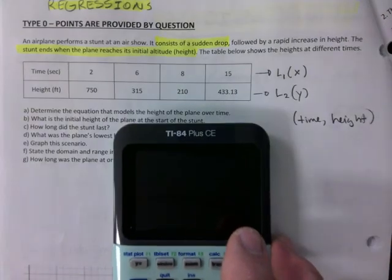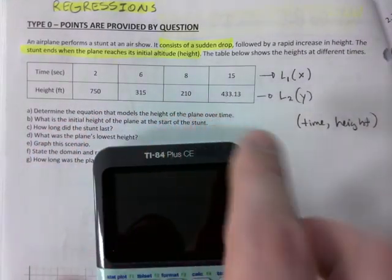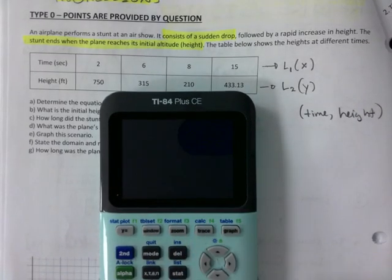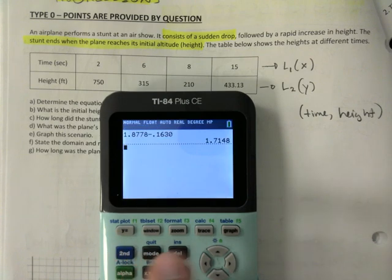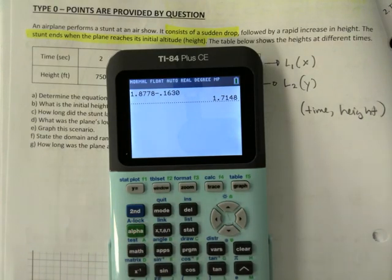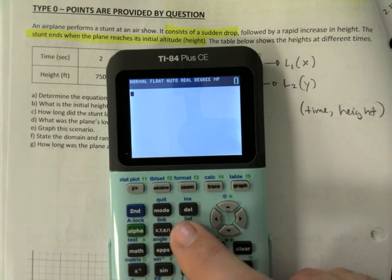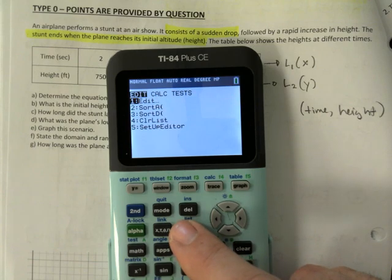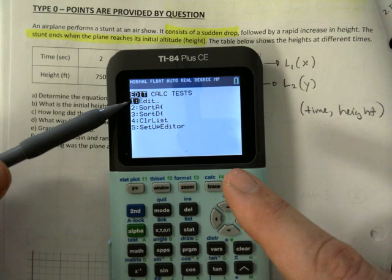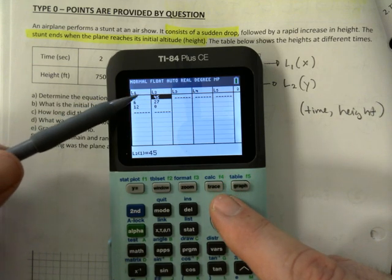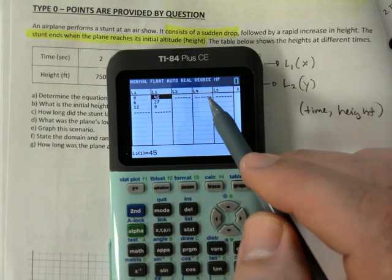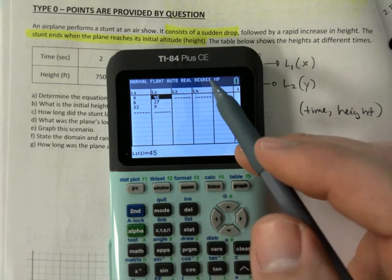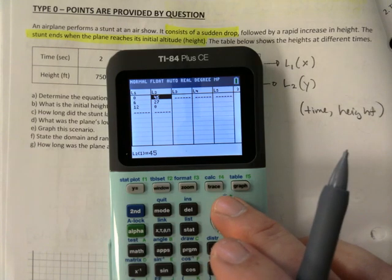We need to come up with an equation. Go to your main screen — Second Mode always quits to the main screen. Clear everything there. We're going to perform our regression, which requires pressing STAT a lot. Press STAT, go to Edit, and hit Enter. You should have L1, L2, L3 — pay close attention that you have L1, L2, L3, L4.